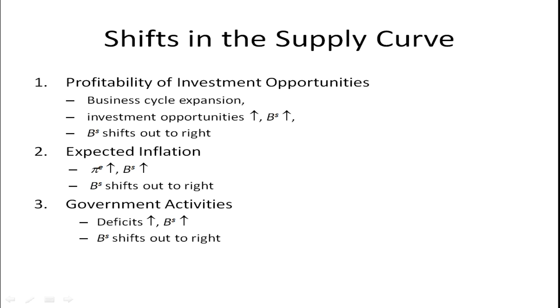Let's take a look at factors that shift the supply curve for bonds. Profitability of investment opportunities. If the economy is expanding, there's greater investment opportunities. Businesses are going to be willing to borrow more money, that is, issue bonds, to finance these investment opportunities. That's going to shift the supply curve out to the right.